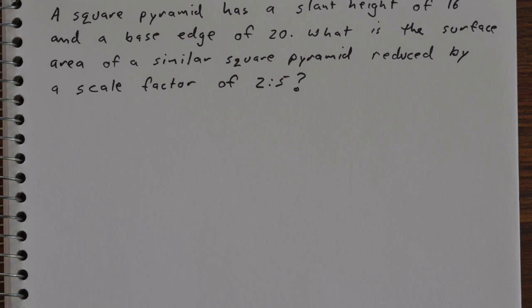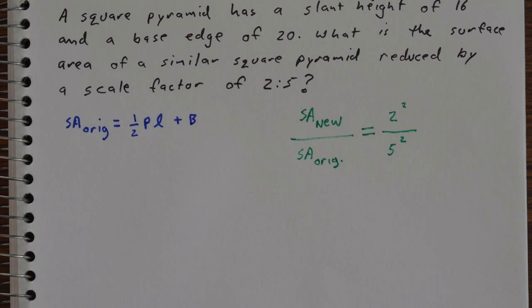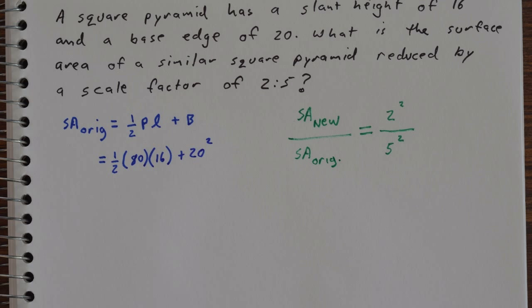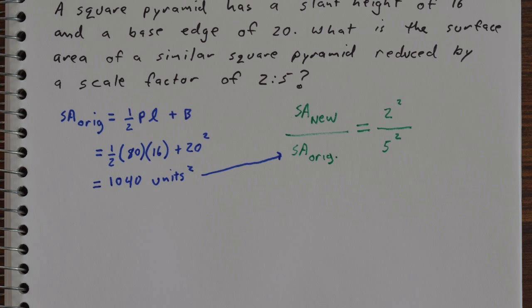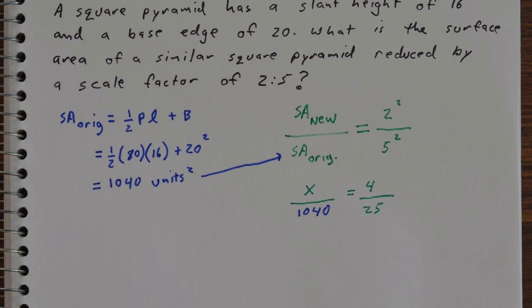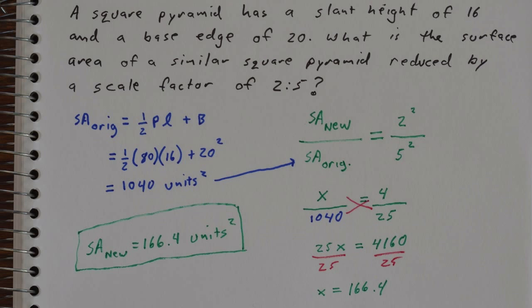So we're going to use the proportions idea. The surface area of the new divided by surface area of the old must follow 2 squared to 5 squared. And so the surface area of the original we can find using one half perimeter times slant height plus the area of one base, and so that gives us 1,040 square units. We'll sub that into our proportions calculations and solve for the unknown. And so therefore the surface area of the new smaller pyramid will be 166.4 square units.